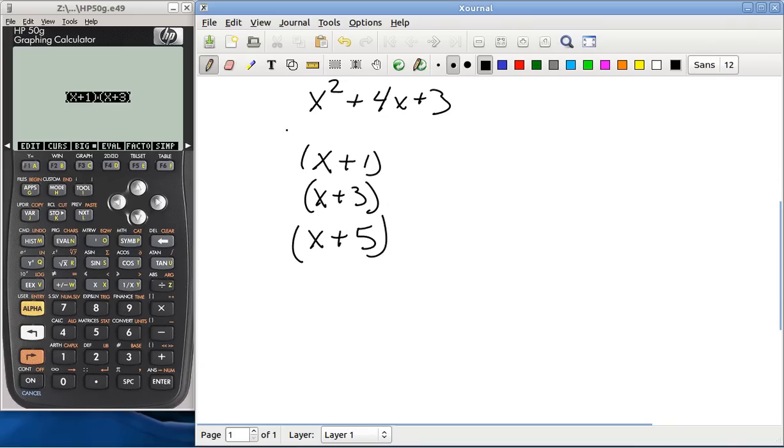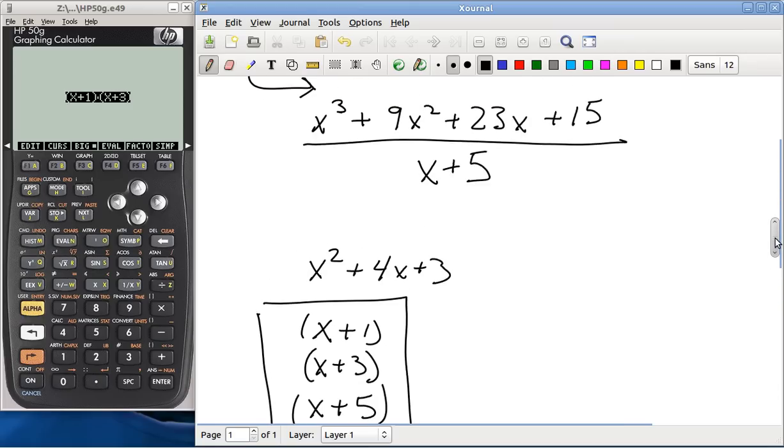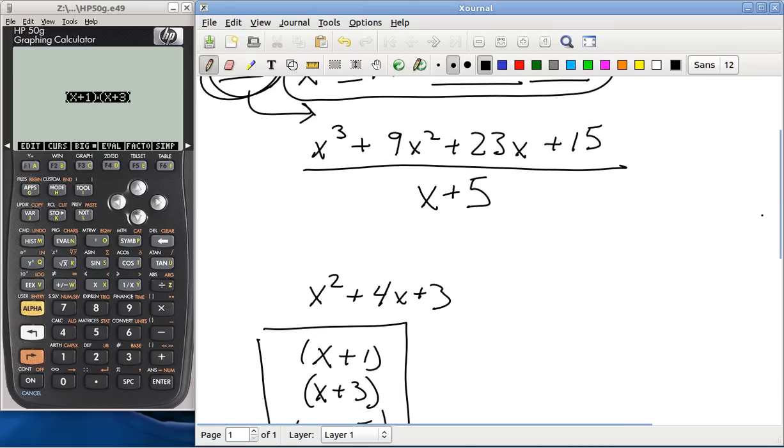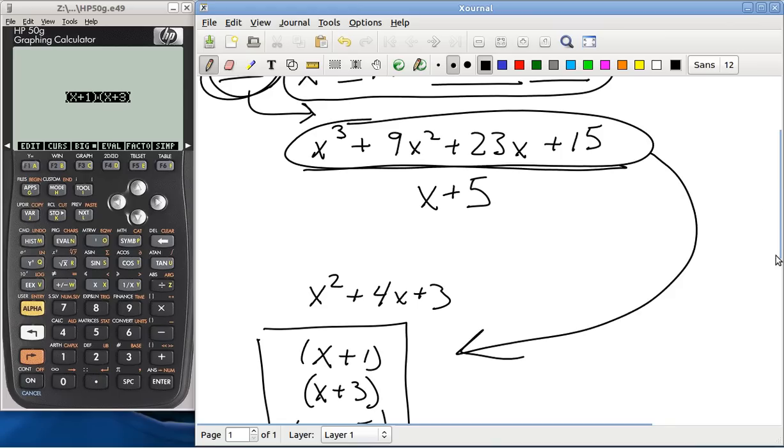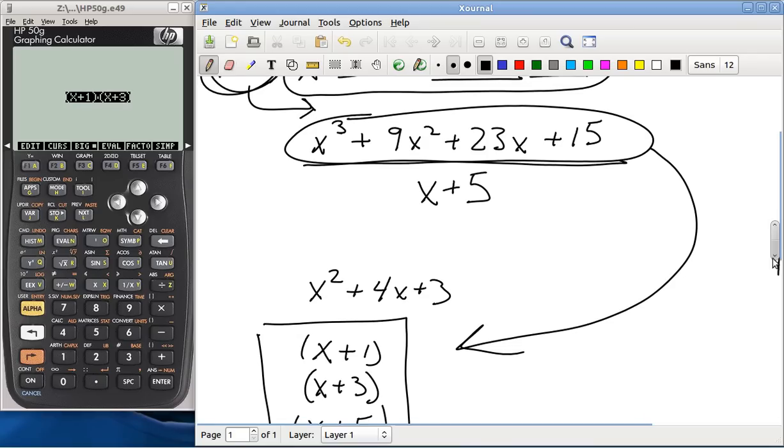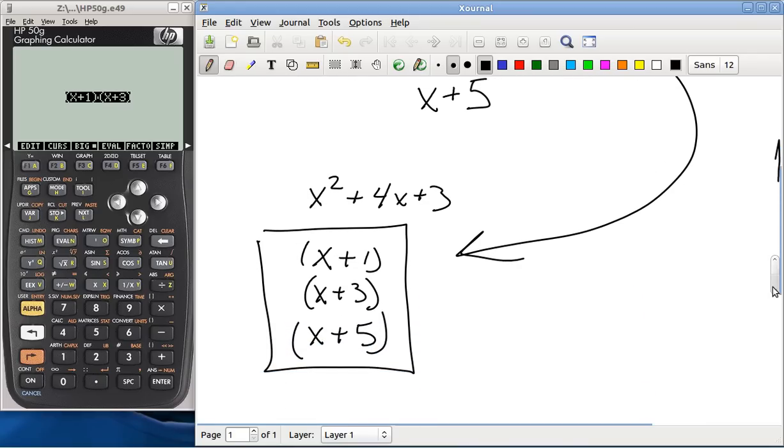And there you have it. The factors of x cubed plus 9x squared plus 23x plus 15, right here, are right here: x plus 1, x plus 3, and x plus 5.